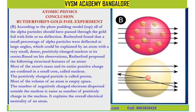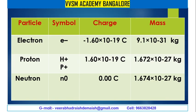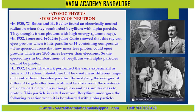Rutherford's gold foil experiment tells us that most of the observations show the entire positive charge is confined in a small core called the nucleus of an atom. The particles — electron, proton, and neutron — their symbols, charges, and masses are respectively given in detail.